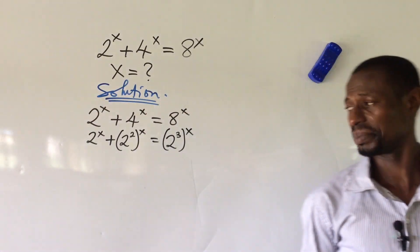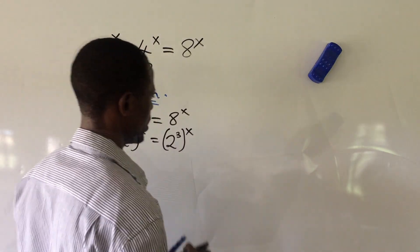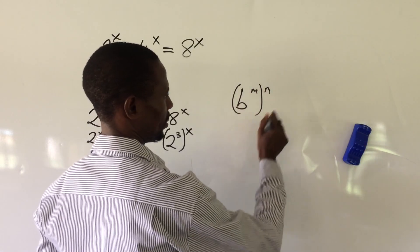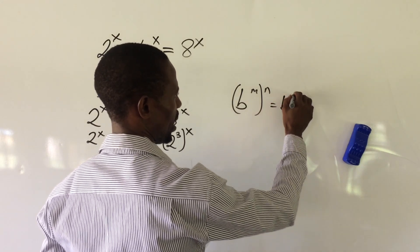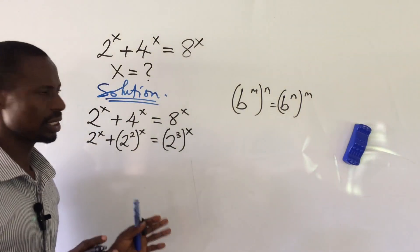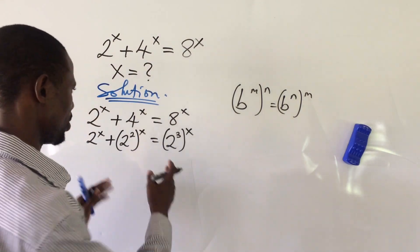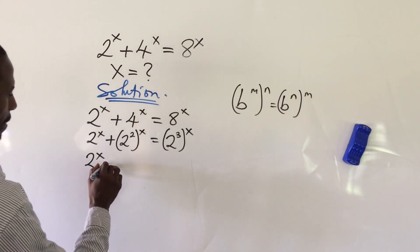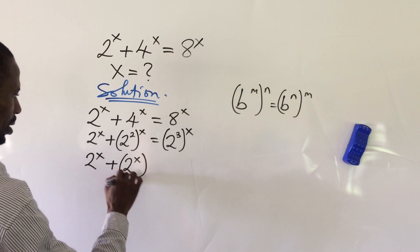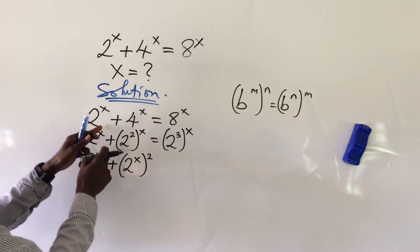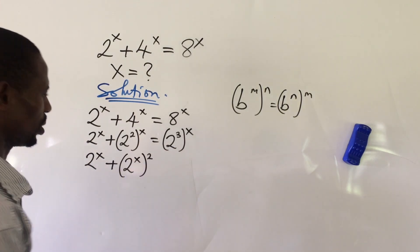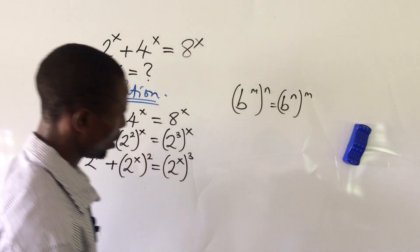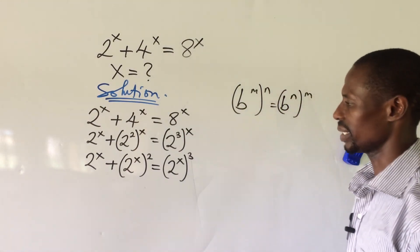This hasn't really changed the game yet. According to the law of indices, if you have b to the power of m, further raised to the power of n, we can rewrite this as b to the power of n to the power of m — exchanging the exponents. So we can rewrite this expression as 2 to the power of x plus 2 to the power of x, bracketed, to the power of 2, equal to 2 to the power of x, all to the power of 3.